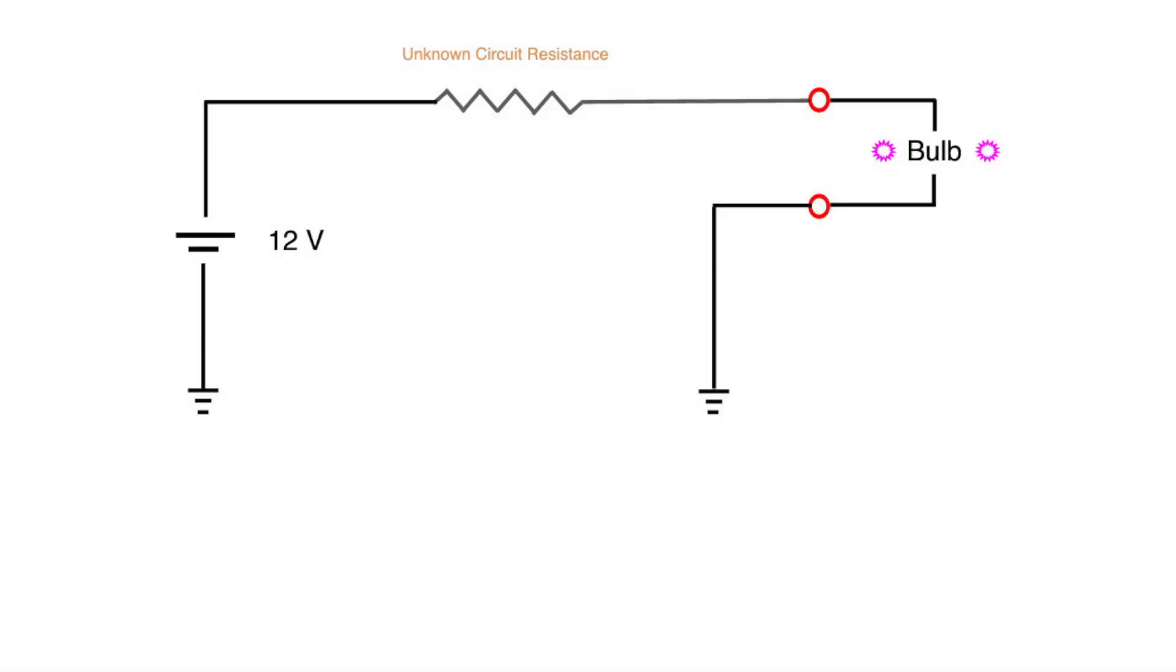We do that by putting a known resistance in the form of a light bulb across the connector. By getting electrons moving, the bulb drags voltage down in a series of steps at each point of resistance. And you can measure those voltage drops to calculate the unknown resistance.